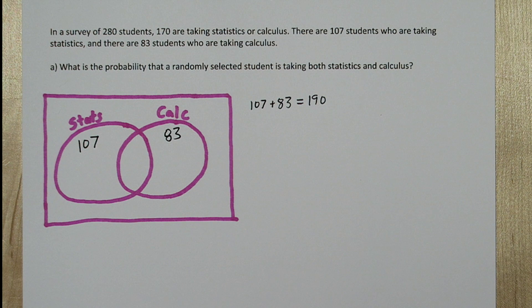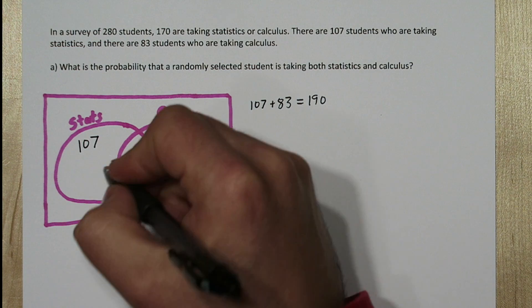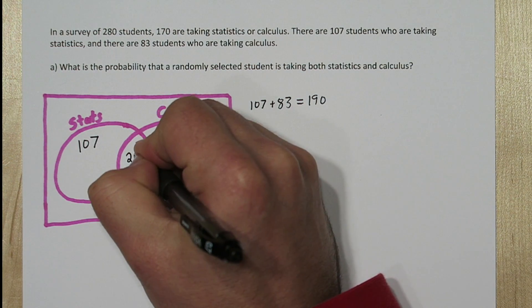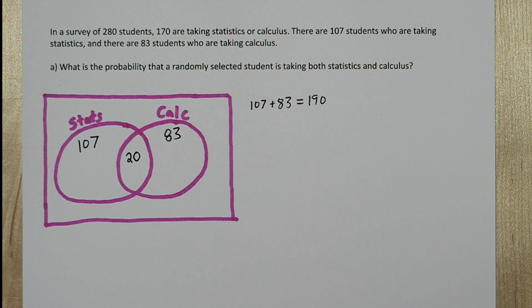The problem is there's 20 students who are taking both stats and calculus. So when we counted them in the statistics bubble and then recounted them in the calculus bubble, they got double counted. So let's put a 20 in the intersection between the two bubbles here.